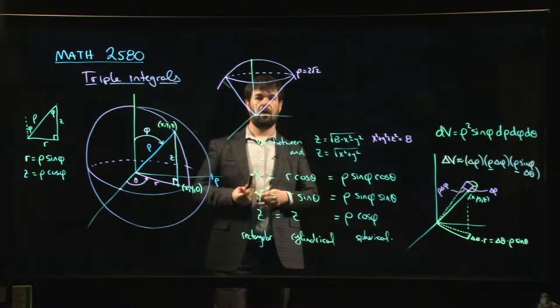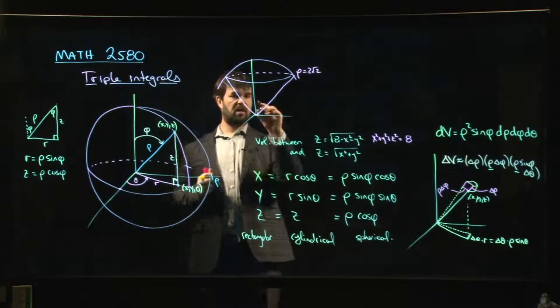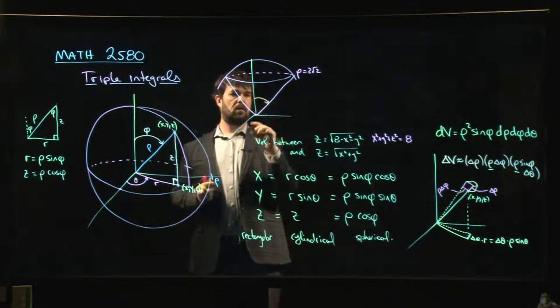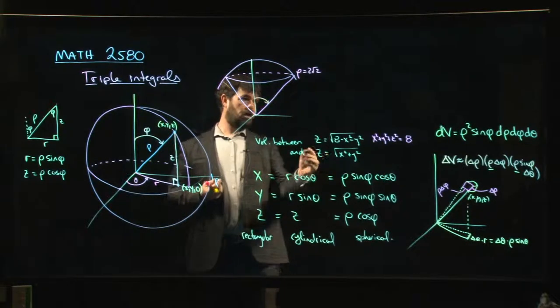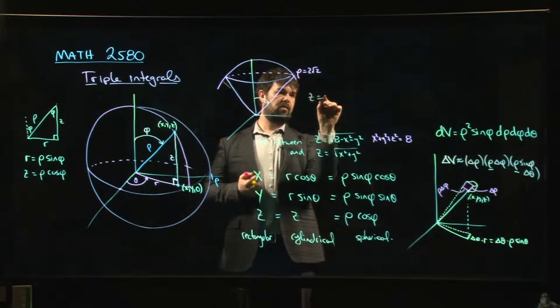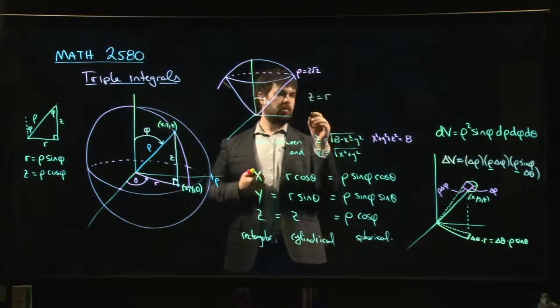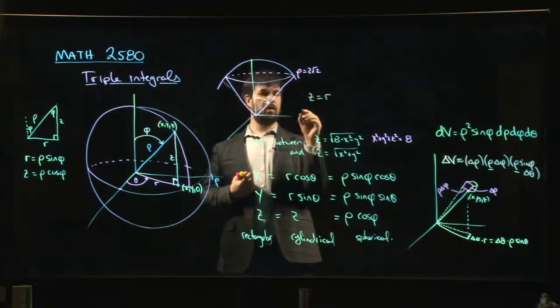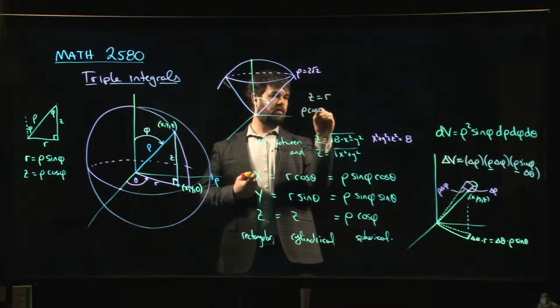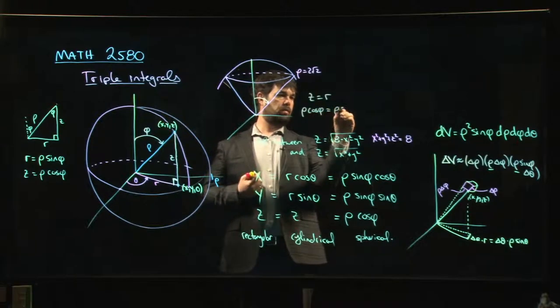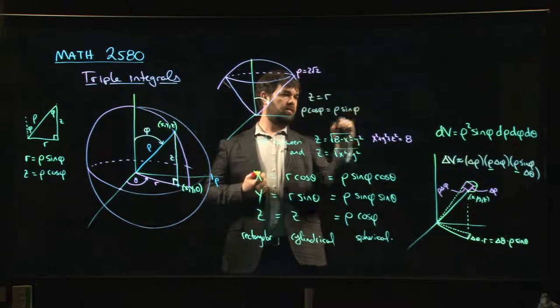So let's see, z equals r. What is the angle that you have here? Well, this angle is going to be, let's see, so z, we can think of it this way. Z is r, right, because that's just r. So that means that rho cos phi is equal to rho sine phi.